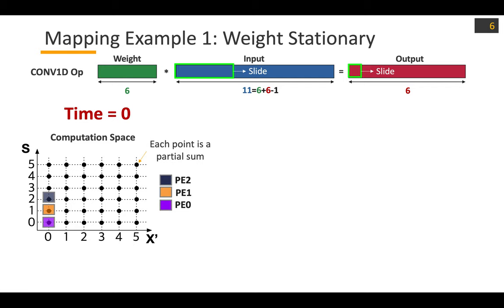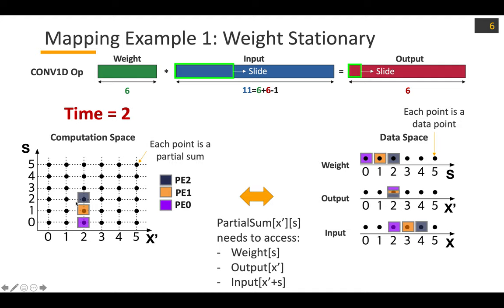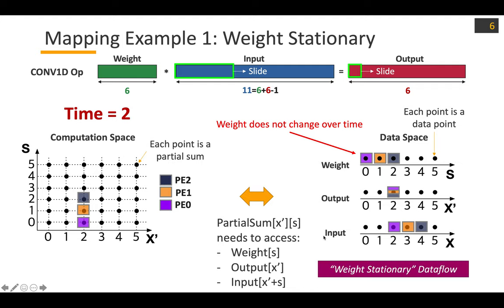In this example mapping, this is the corresponding data space from the initial mapping — I applied the relationship to find corresponding points in data space. In the next time step, the mapping moves in the horizontal direction, which is the output dimension. We can observe the weight mapping didn't change over time, but the input activation mapping changed over time steps. That means if we have local buffers at each PE, we can store weight values and reuse them for the next time steps. That's why this mapping is called weight stationary style mapping.